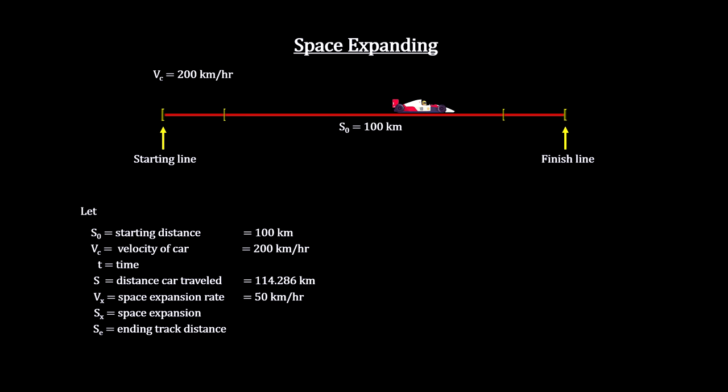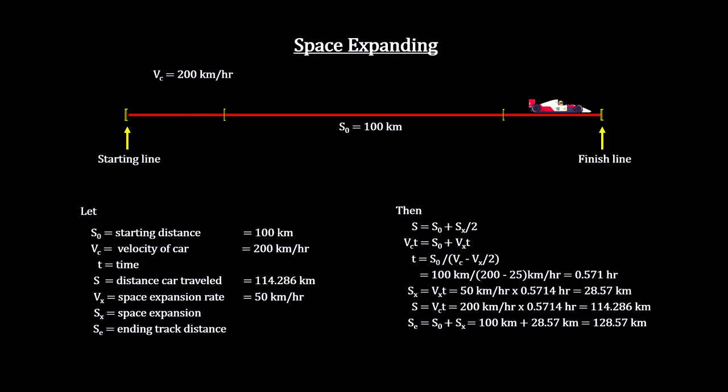But it will be less than the length of the track when the car crosses the finish line, because some of the expansion will have happened to space the car had already traveled through. A little algebra gives us the exact numbers.